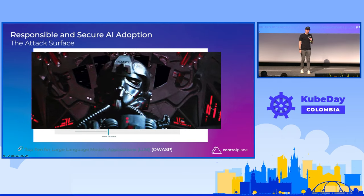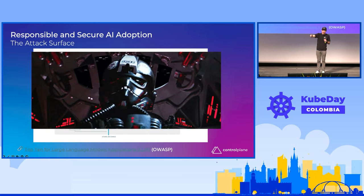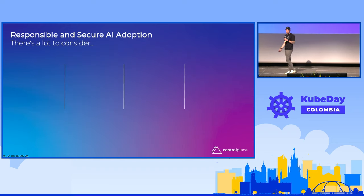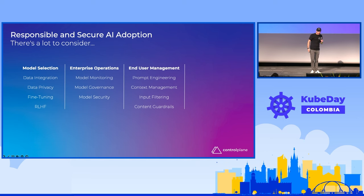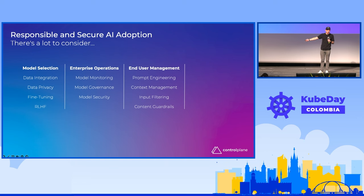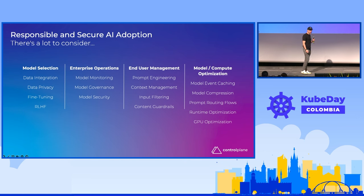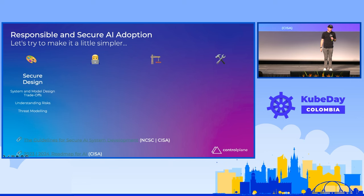Doing this in a responsible way — there's a lot to consider here. That includes how we start with the model, how we do our ML ops with the model, how we manage the people who are interacting with the model. Do we suddenly replace authentication within model systems? We've never done that before, so why would we do that now? And the cost of running these things — the carbon footprints, the amount of water used to cool the data centers.